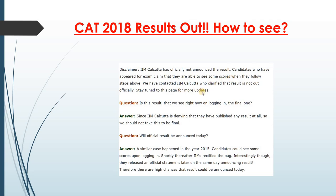IIM Calcutta was contacted about whether it was an official result — it was not. So the question is: is this result we see now the final one? IIM Calcutta is denying that they have published any result at all. We should not take this to be final, but trust me, this is going to be your final result, because the source code has that information and there's no way they're going to put wrong information in the source code.